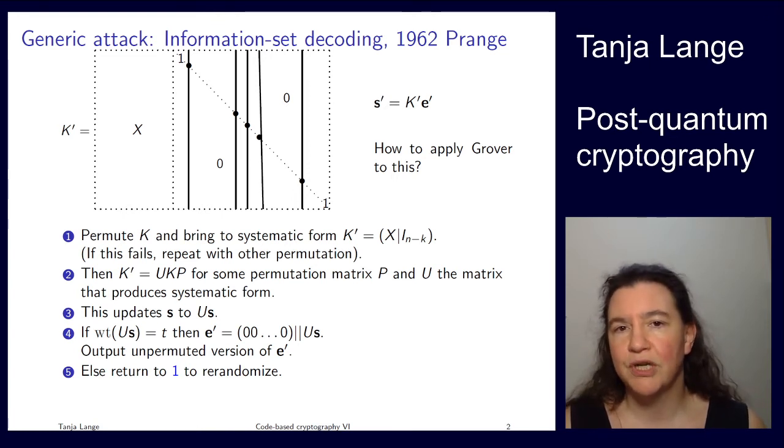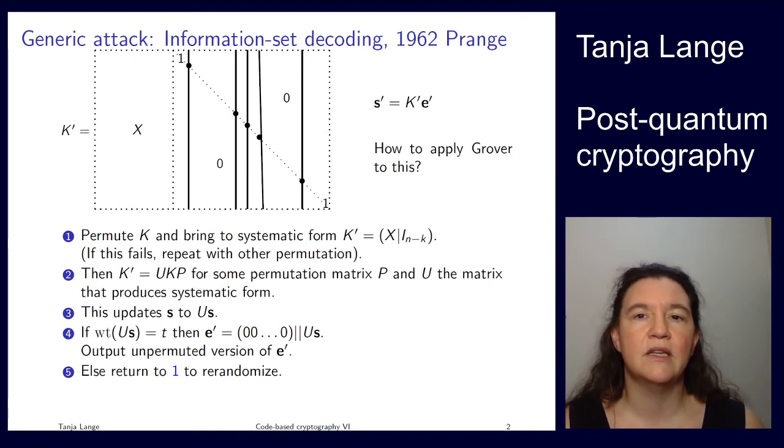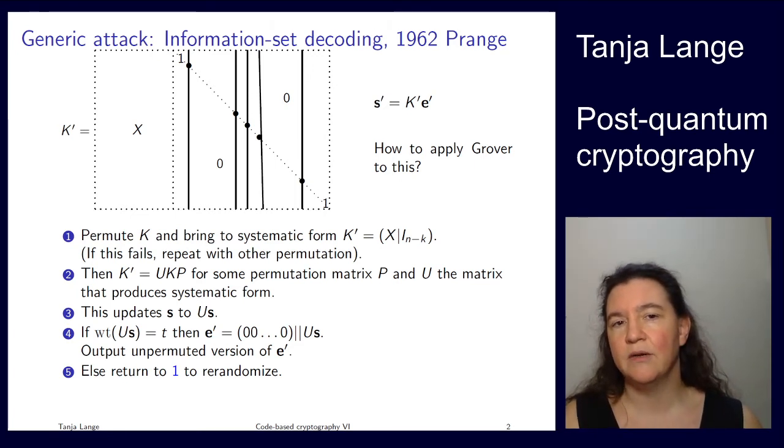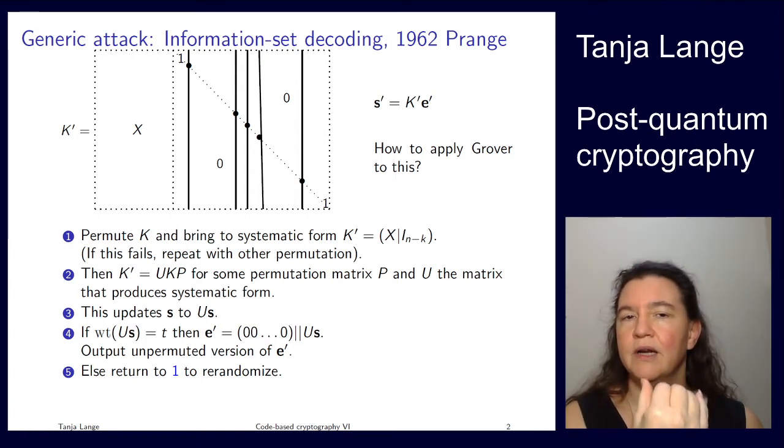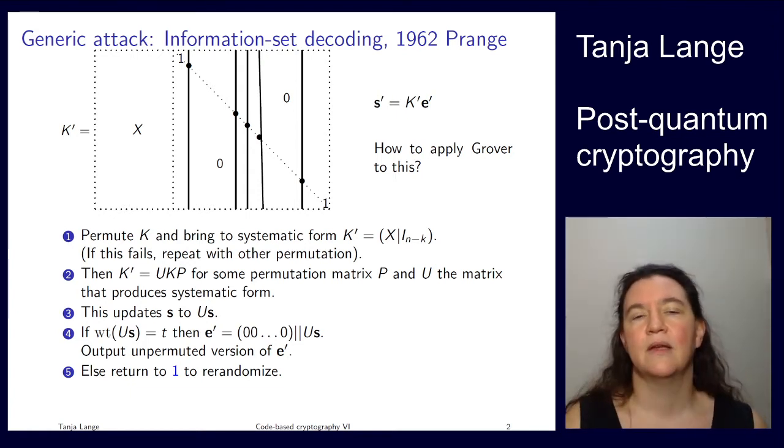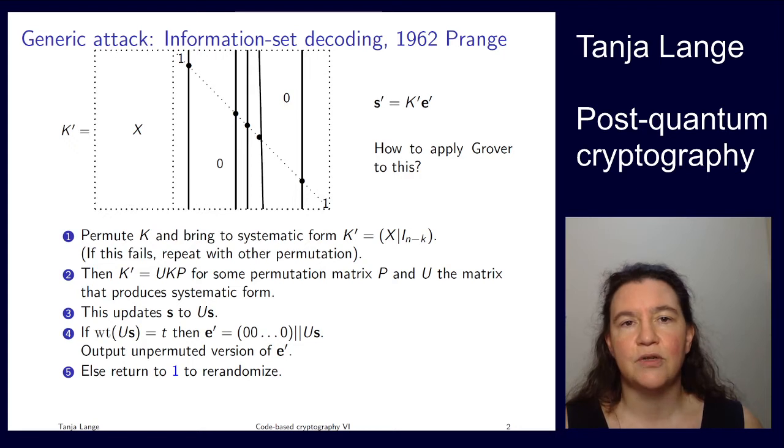But Grover is a much more generic algorithm, and so yes we can probably apply Grover to this. So let's look again at the Prange attack. It runs through these five steps, where at first we are selecting some k columns, we move those to the left here, call them x, and we have the other l minus k columns here.